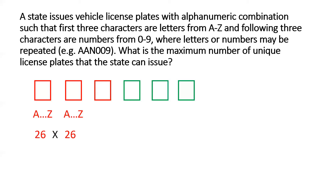In the same way, for the third placeholder we again have 26 different options from A to Z. So the first three placeholders can be filled up in 26 multiplied by 26 multiplied by 26 different ways — that's 26 cubed different ways.